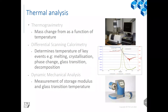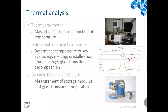We also have a range of thermal analysis equipment. Thermogravimetry allows us to understand mass change as a function of temperature for polymers and coating systems. We can undertake differential scanning calorimetry for quantified measurement of a range of characteristics. We can also undertake dynamic mechanical analysis to obtain key values such as storage modulus and glass transition temperatures of candidate or produced systems.